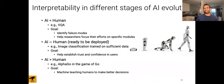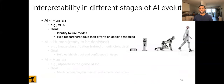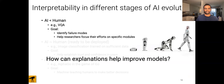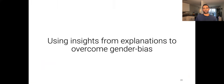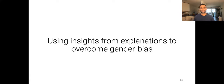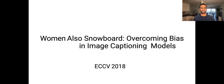I would like to think that we are still in the first regime where humans are still better than AI. Now let's see how explanations can help improve various aspects of these models. In the first work, we talk about how insights gained from explanations can be used to overcome gender bias. This work is called 'Women Also Snowboard: Overcoming Bias in Image Captioning Models,' presented at ECCV 2018.